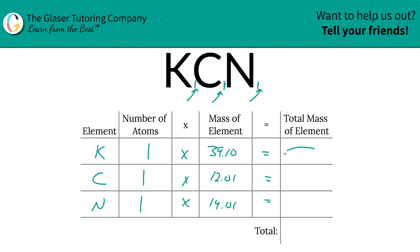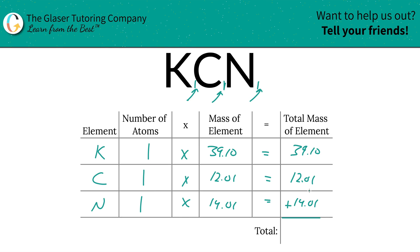Now to find the total mass of the element in the compound, we're going to simply multiply the row across. So this is 39.10 total mass for potassium, carbon is 12.01, nitrogen is going to be 14.01. I hope the math in this class works out to be like this all the time. And then we're simply going to add up the entire column here. So this is going to be 65.12.